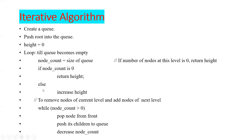If the count is greater than 0, we increase the height. To do this, we dequeue the front value from the queue and insert its child nodes into the queue, then decrease the node count. This process repeats until the node count becomes 0. When it reaches 0, the final height value is returned as the height of the tree. This is the algorithm, and we can write the iterative code based on this logic.